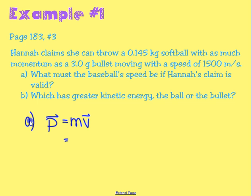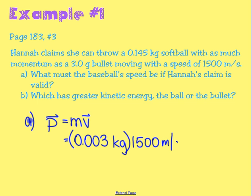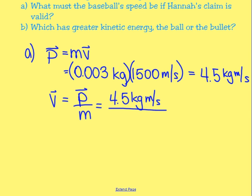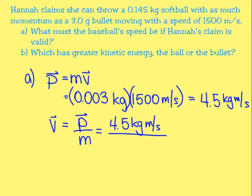Mass must be in kilograms, and the bullet's mass is given in grams, so we convert: 3 grams = 0.003 kilograms. Multiplying by the velocity of 1,500 meters per second gives a bullet momentum of 4.5 kilogram meters per second. To find the softball's required speed, velocity equals momentum divided by mass: 4.5 divided by 0.145 kilograms, which gives a velocity of 31 meters per second.